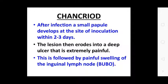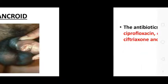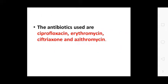Chancroid: After infection, a small papule develops at the site of inoculation within two to three days. The lesion erodes into a deep ulcer that is extremely painful. This is followed by painful swelling of the inguinal lymph nodes. Antibiotics used include ciprofloxacin, erythromycin, ceftriaxone, and azithromycin.